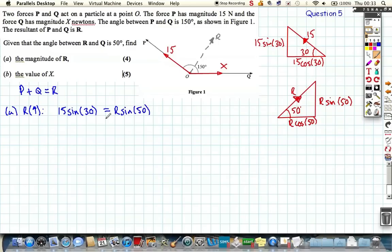So we can rearrange that quite easily. Just divide both sides by sine 50. So we get R using our calculator: 9.79055467. Importantly, I'm going to keep that on my calculator. But a rounded answer I'm going to write down is 9.79 Newtons to three significant figures. But I am keeping that answer on my calculator.